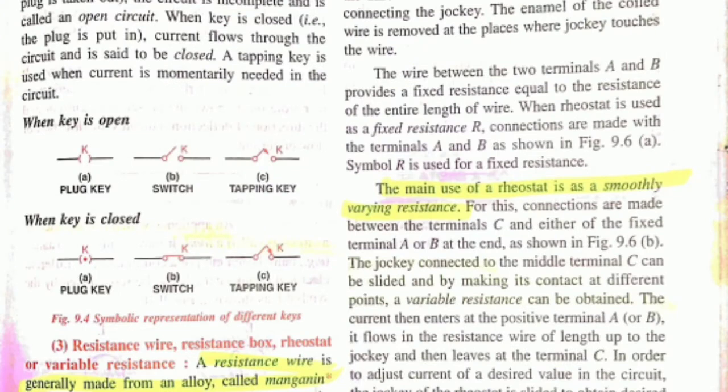Third one is resistance wire and resistance box, rheostat or variable resistance. Basically, resistance refers to the obstruction offered to the current - the obstruction offered to the current in simple language. To reduce the excessive amount of current to flow.